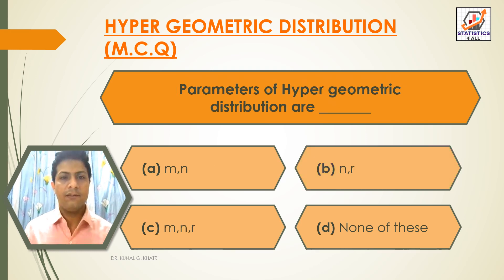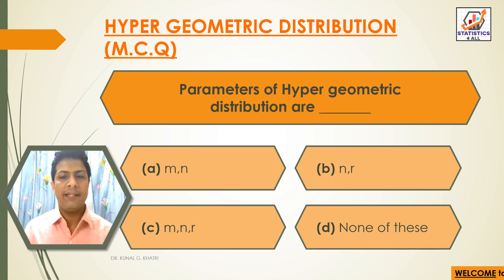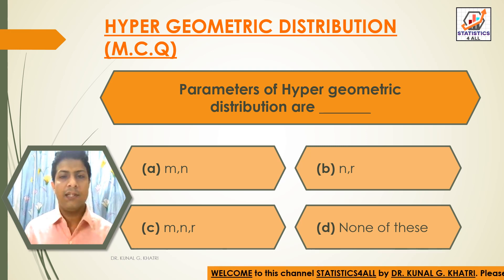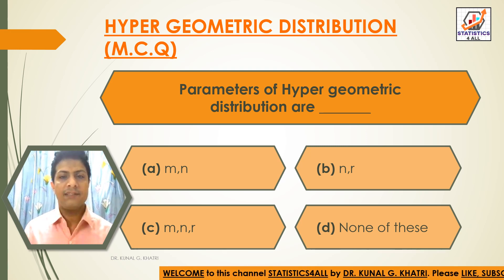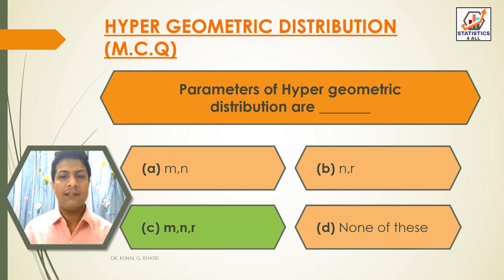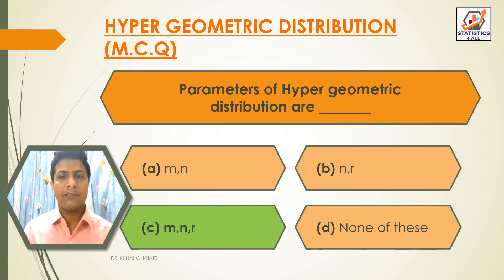Next question: Parameters of Hypergeometric distribution are — Option A: mn, Option B: nr, Option C: mnr, Option D: None of these. The answer is Option C — mnr. Parameters of Hypergeometric distribution are m, n, and r.